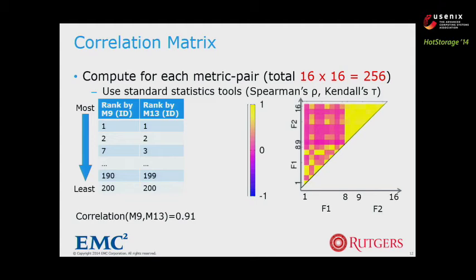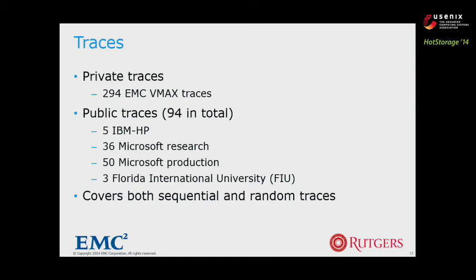We performed a comprehensive and systematic study of I/O sequentiality across different traces. We used 294 EMC VMAG traces having at least one gigabyte of writes and reads, and also selected 94 public traces covering a wide range of applications. Both datasets cover sequential and random patterns. We will present results from the public traces so that others can repeat our experiment.